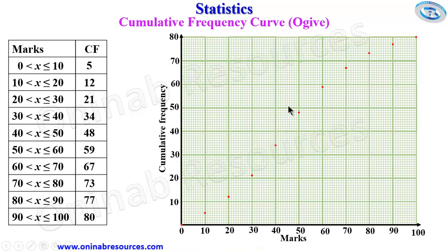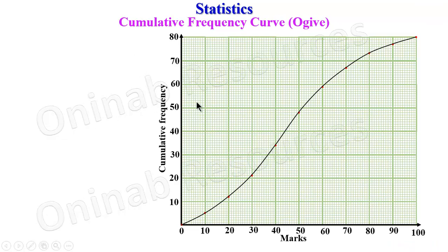So we then join these points. We can join with free hand if we do not have French curve. And locally, we can join with broomstick. So joining the points now, we have the cumulative frequency curve for this distribution. So having done this, we are going to use it to calculate the problem given earlier.